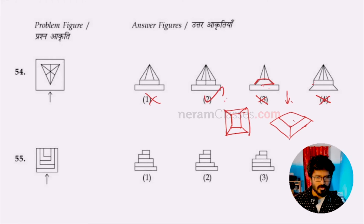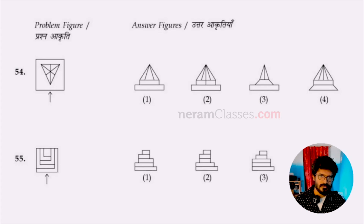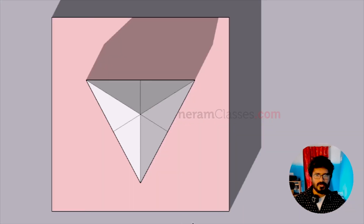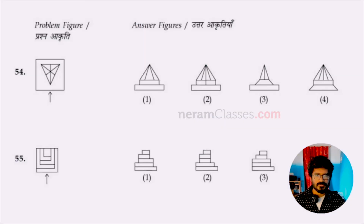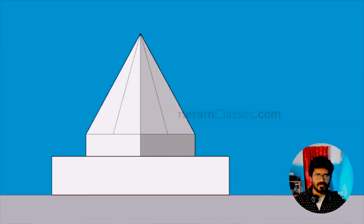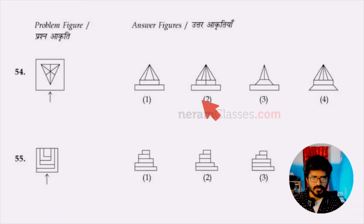The 3D solid for question 54 looks like a chamfered cuboid — when viewed from the top it shows two aligned squares with lines, and the front elevation appears as option two. So option two is confirmed as the right answer.